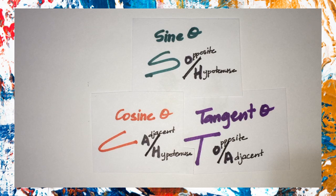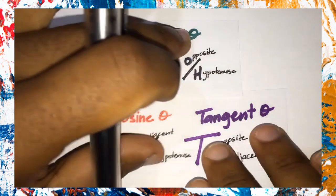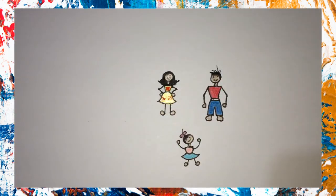The sine ratio, cosine ratio, and tangent ratio are about relationships between different sides of a right angle triangle, and how they operate together given a specific angle. And it's pretty much like a family relationship. Let's look at it.